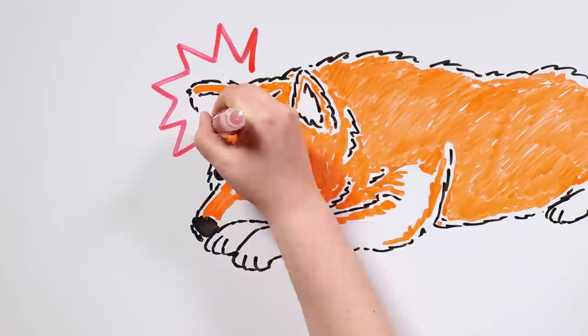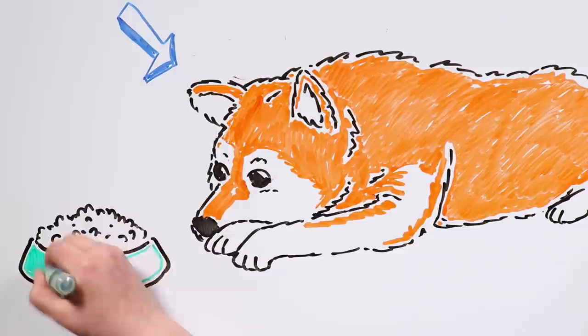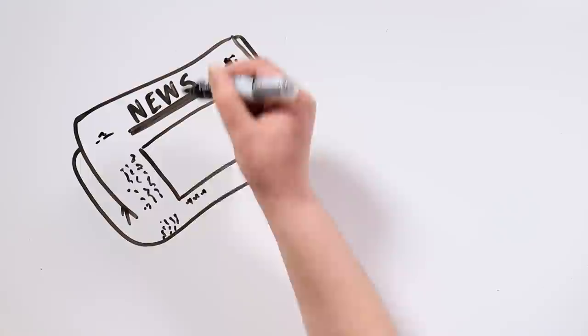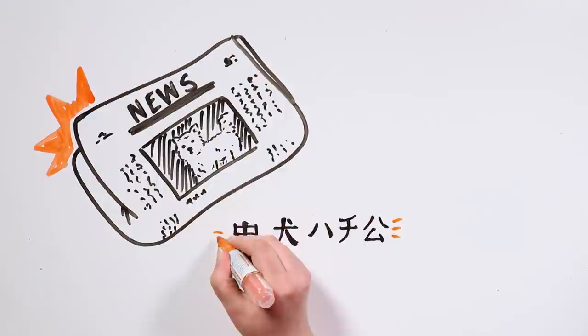The people who had seen Hachiko join the professor and welcomed him every day decided to take care of him and feed him during all those years. Japanese newspapers spread the news, and people ended up naming him Chuken Hachiko, which means the loyal dog Hachiko.